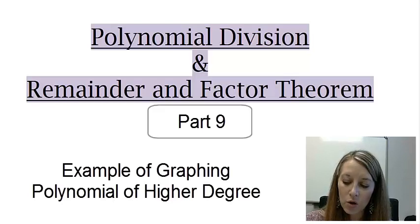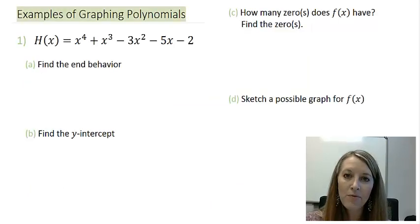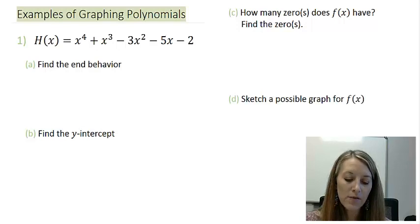Let's go ahead and look at the example that I have pulled up here. H(x) is equal to x to the fourth plus x cubed minus 3x squared minus 5x minus 2. I encourage you to do all four steps of this process on your own to come up with a sketch of this graph. So this would be the time to pause the video.